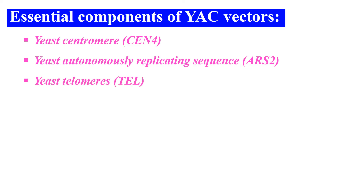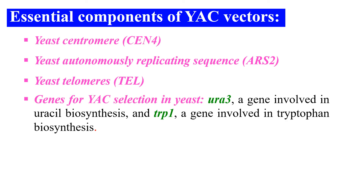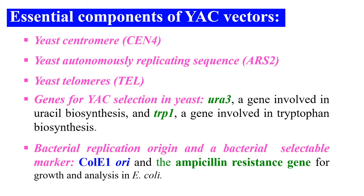Another component of the YAC vector is the TEL sequence — the yeast telomeric sequence — present at the ends of chromosomes and necessary for replication and maintenance of the YAC vector. For selection in yeast, the YAC vector contains two genes: URA3, involved in uracil biosynthesis, and TRP1, involved in tryptophan biosynthesis. Besides this, it also contains a bacterial origin of replication and selectable marker, since the YAC vector can also be used in bacteria as a host.